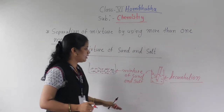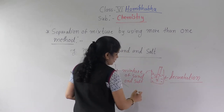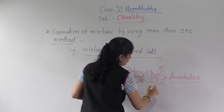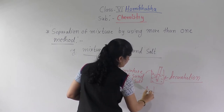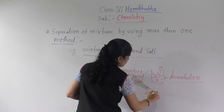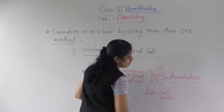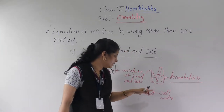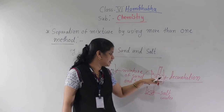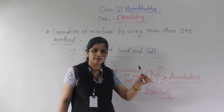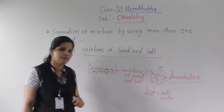With the help of decantation, what will we separate? We will pour the water into another beaker. Now here we will get salt water, because salt is soluble in this water. With the help of decantation, what we separated — the sediment layer is the sand — we will get that. But still the salt is remaining in the water.